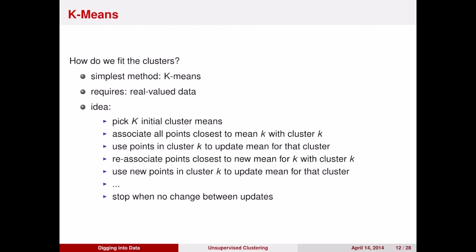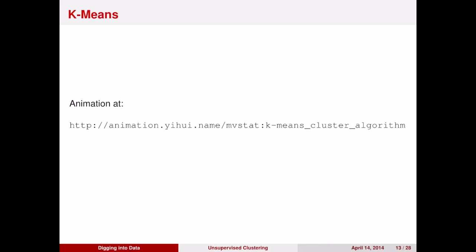K-means requires real-valued data, and the algorithm is very simple. You first start with k initial cluster means, and then, given those means, you take all the data observations that are closest to that mean and assign them to that cluster. Then you update the mean for that cluster by taking the average position of all the points in that cluster. Then you re-associate the closest data points to that cluster mean with that cluster. You stop your algorithm when there are no changes. Here's a really nice animation of k-means that you might want to look at.